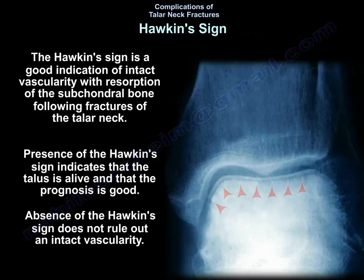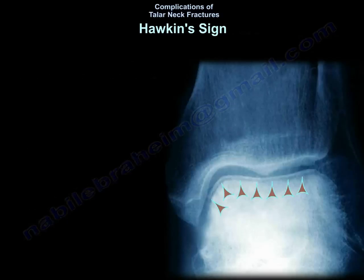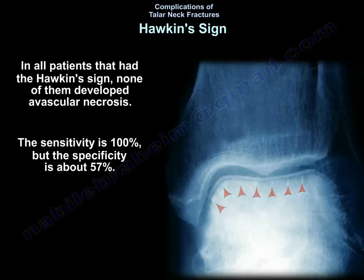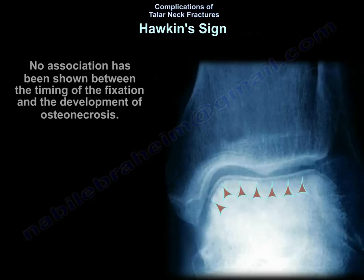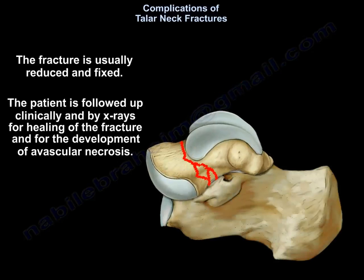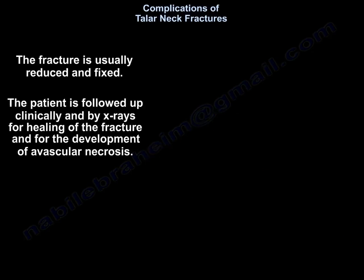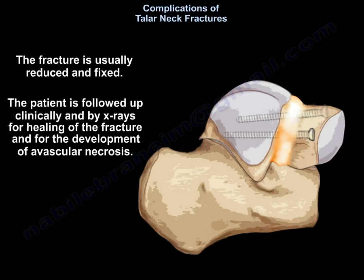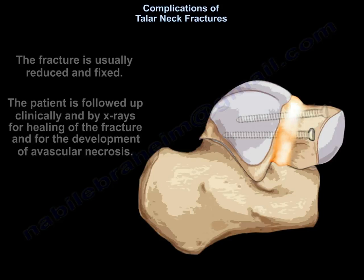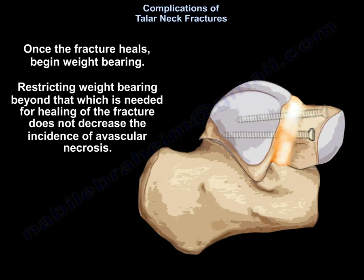The absence of the Hawkins sign does not rule out an intact vascularity. In all patients who had the Hawkins sign, none of them developed avascular necrosis — so the sensitivity is 100%, but the specificity is about 57%. No association has been shown between the timing of fixation and the development of osteonecrosis. The fracture is usually reduced and fixed, and the patient is followed up clinically and by x-rays for fracture healing and for the development of avascular necrosis. Once the fracture heals, begin weight-bearing. Restricting weight-bearing beyond what is needed for fracture healing does not decrease the incidence of avascular necrosis.